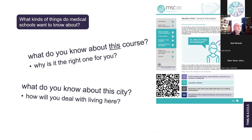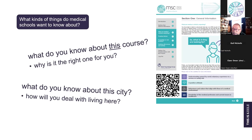There are one or two medical schools that will want to know that students have specific awareness about the course they're being interviewed for and the location where they will be studying — how much they understand about the style, delivery, and content of the course, and why that style may be appropriate for them. In one example, they may be asked what they know about the city where the school is located and how they're going to deal with living there for five years. There's a link on the slide to Medical Schools Council resources about the kinds of things being looked for within interviews and things students should be thinking about in preparation.